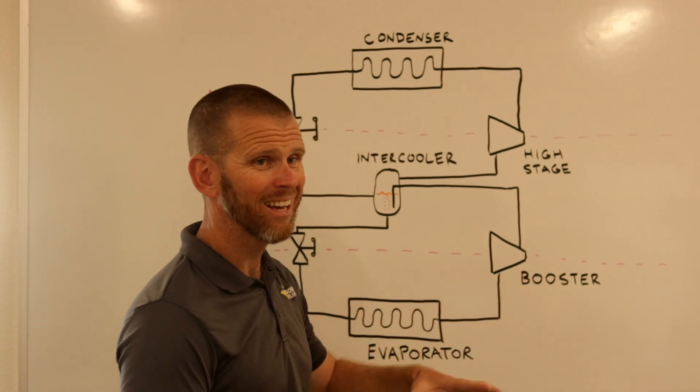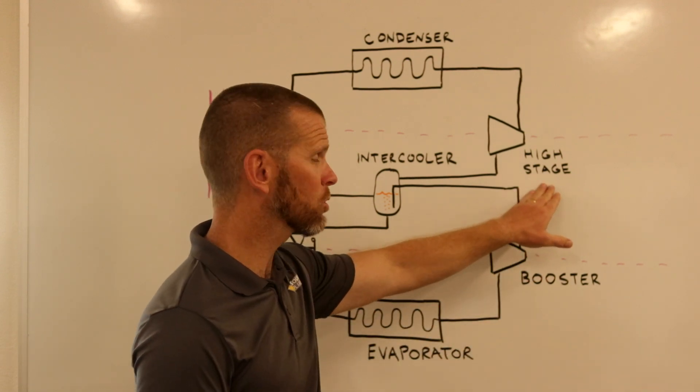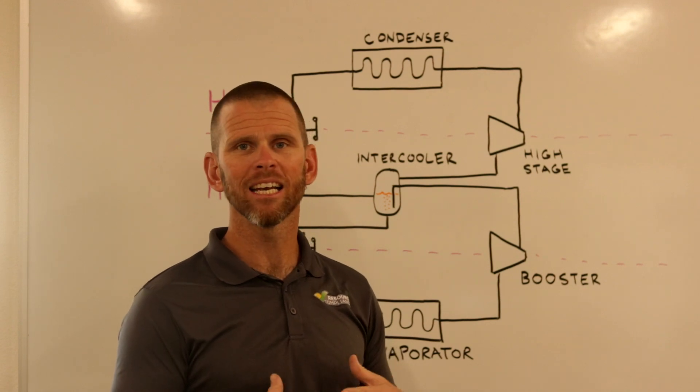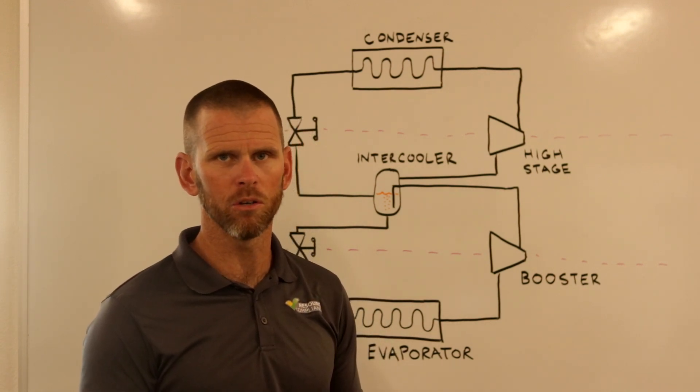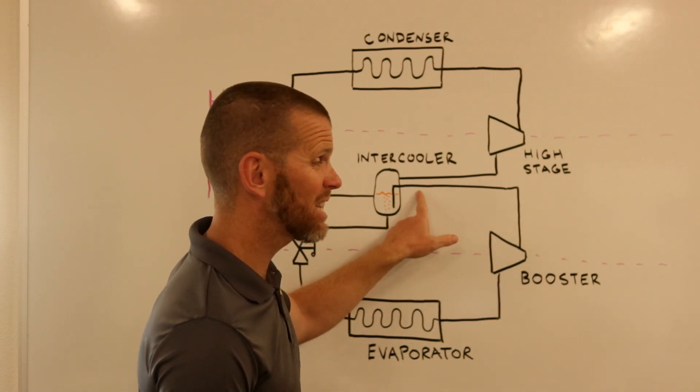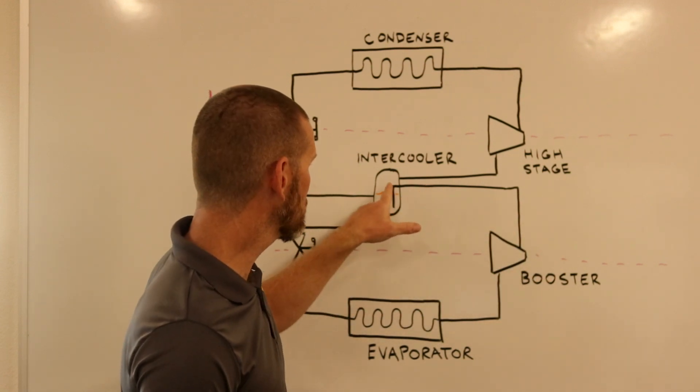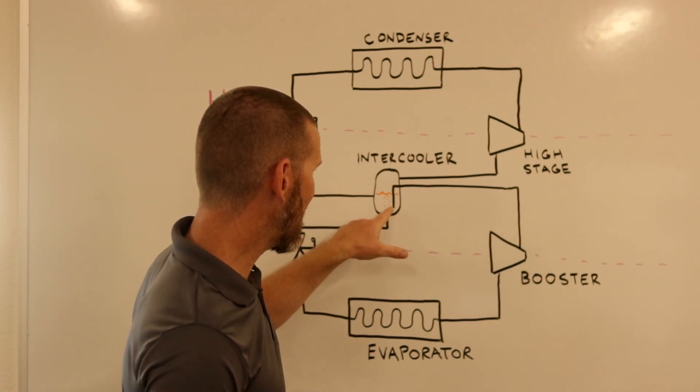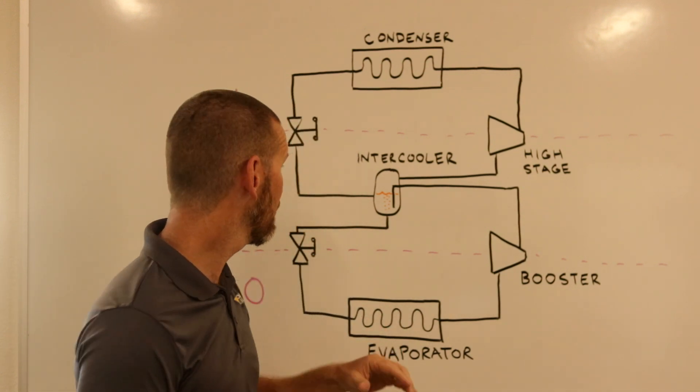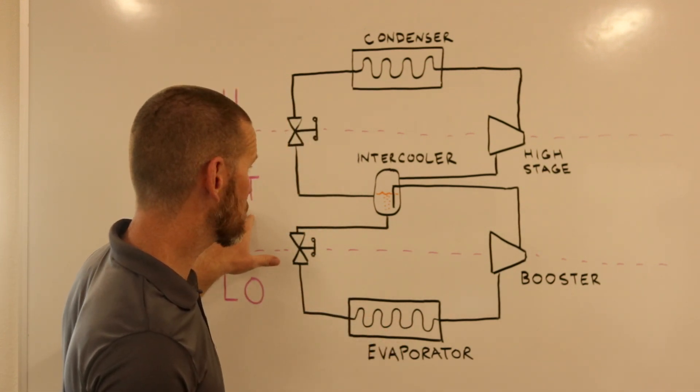The booster compressor functions very similar to a high-stage compressor, except that the discharge from the booster doesn't go to the condenser like we're used to. Instead, the discharge from the booster compressor is piped to the intercooler. I'm showing the pipe here going down to the bottom of the intercooler into that bath of intermediate pressure liquid.